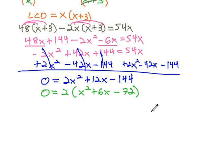And seventy-two, that's six times twelve. So we have two times x plus twelve times x minus six.